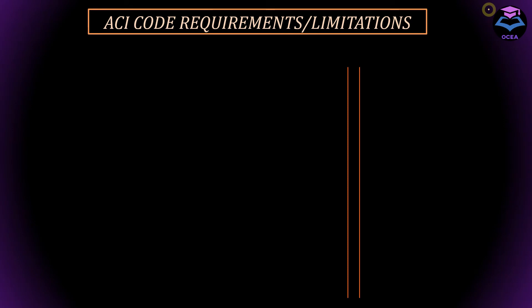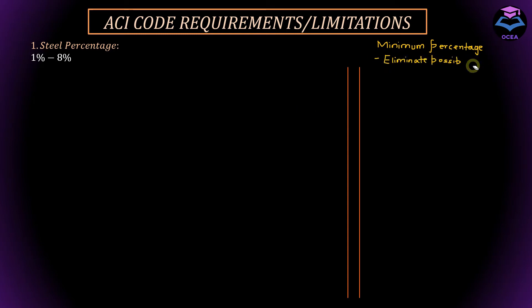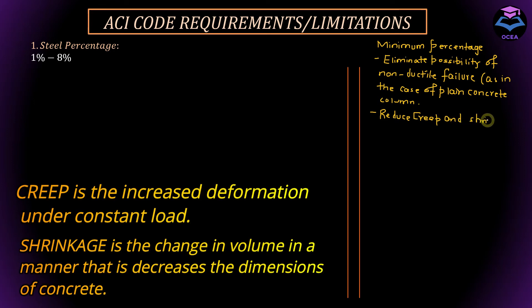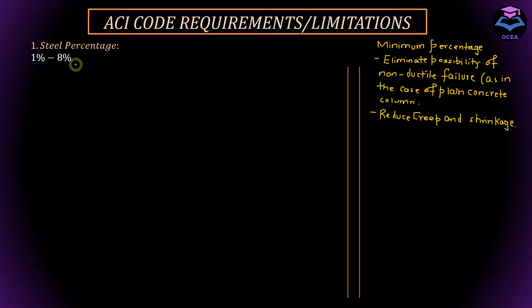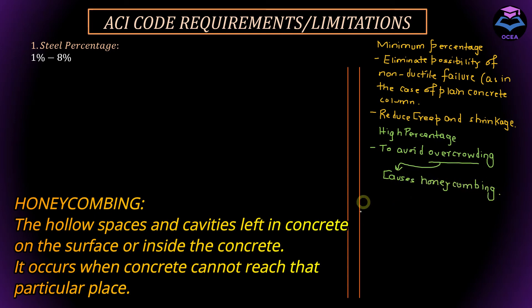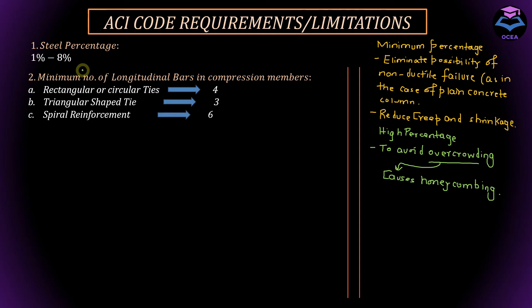For each structural member, the ACI code specifies certain requirements for safe design. The percentage of longitudinal reinforcement must range from 1 to 8 percent. The minimum of 1 percent is provided to eliminate the possibility of non-ductile failure and to reduce creep and shrinkage under sustained compressive force. The maximum of 8 percent is necessary to avoid overcrowding of bars, as a high percentage of steel can cause honeycombing in the column. The ACI code also specifies minimum numbers of longitudinal bars: 4 for rectangular or circular ties, 3 for triangular ties, and 6 for spiral reinforcement.